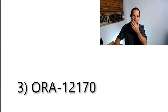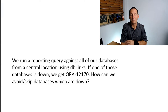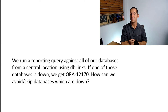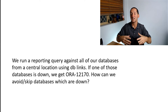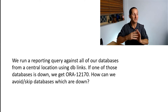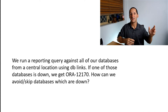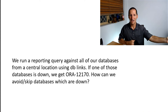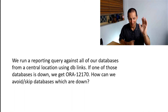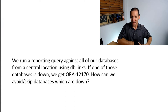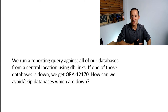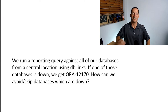Here's the question: we run a reporting query against all of our databases from a central location using DB links, and this is a common thing I see. Someone has a monitoring routine or some sort of investigative routine as a DBA, and they reach out to each database — they create a database link to database one, query that, database link to database two, et cetera, and they simply go around through all of their databases. If one of those databases is down, we get ORA-12170. How can we skip those Oracle databases which are down?